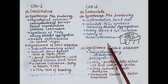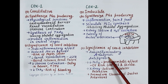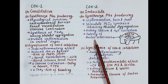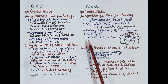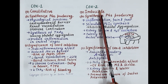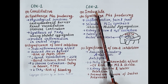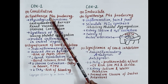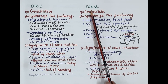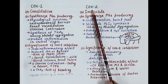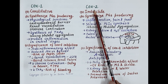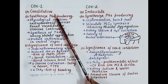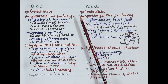Since NSAIDs produce anti-inflammatory, analgesic, and antipyretic action by blocking the synthesis of prostaglandins, NSAIDs are of three types: non-specific COX inhibitors, which block both COX-1 and COX-2; preferential COX-2 inhibitors, which block both but produce more inhibition of COX-2 compared to COX-1; and selective COX-2 inhibitors, which selectively block COX-2 while sparing COX-1. All these NSAIDs reduce inflammation, pain, and fever.